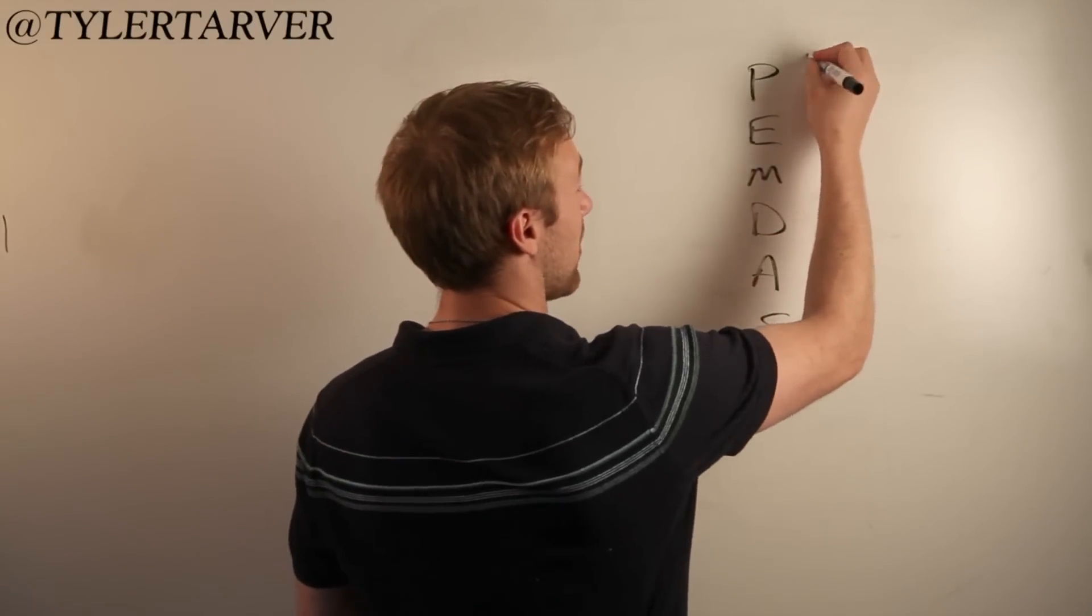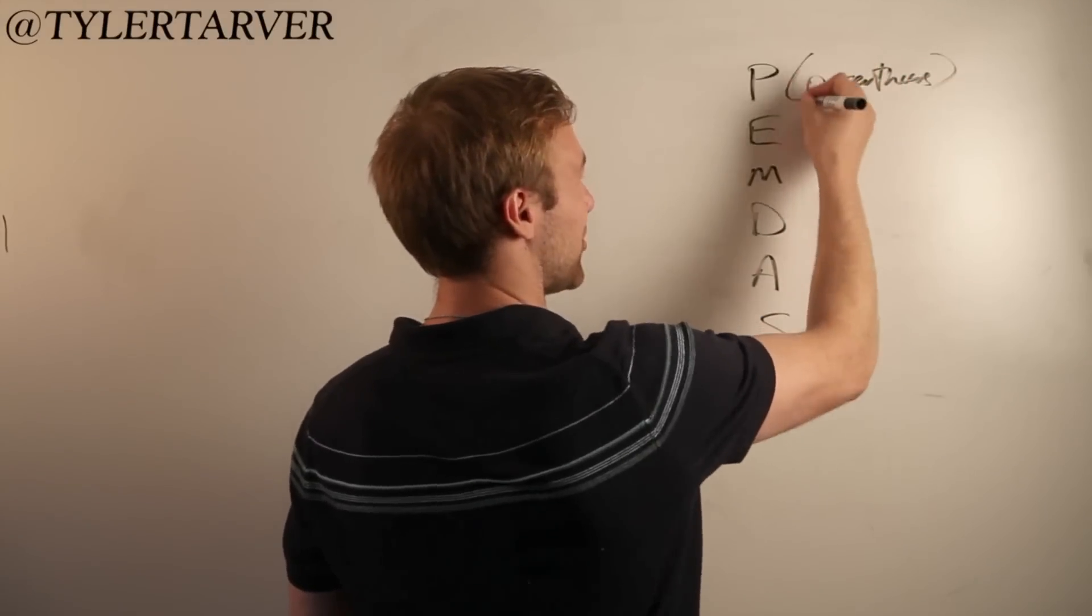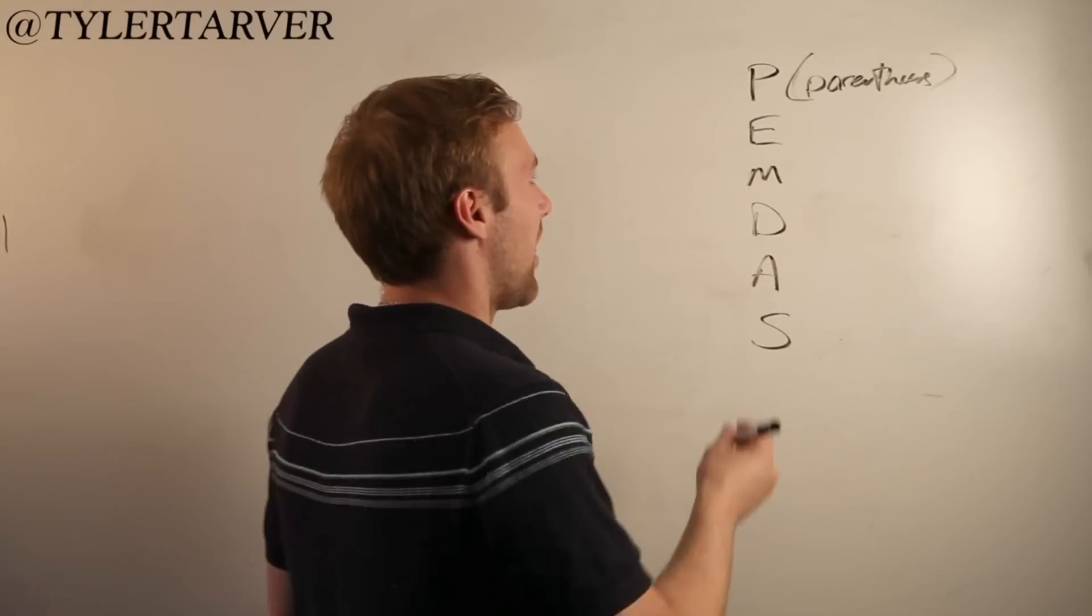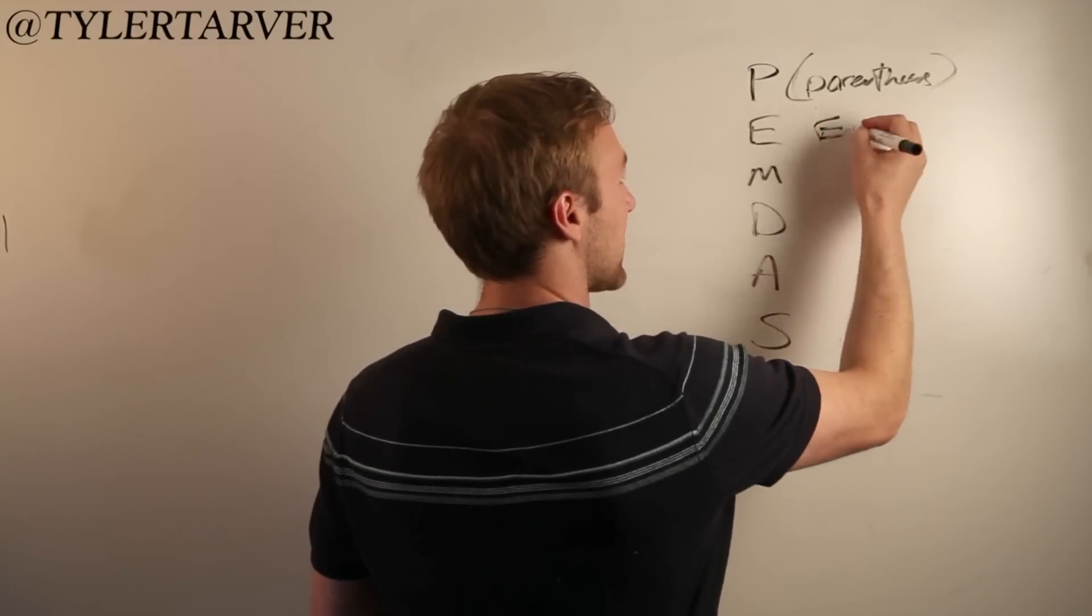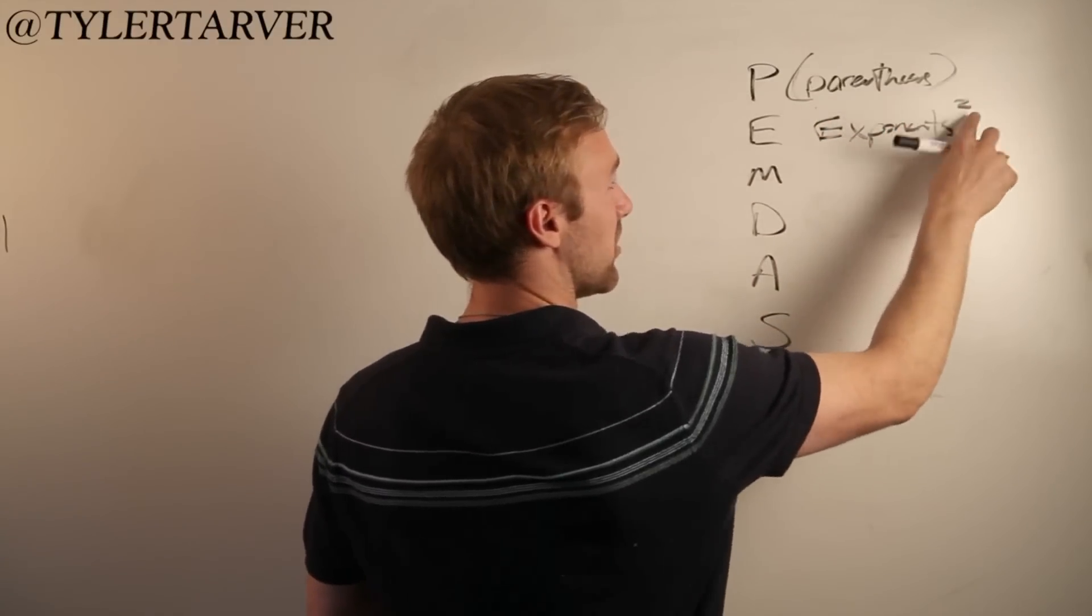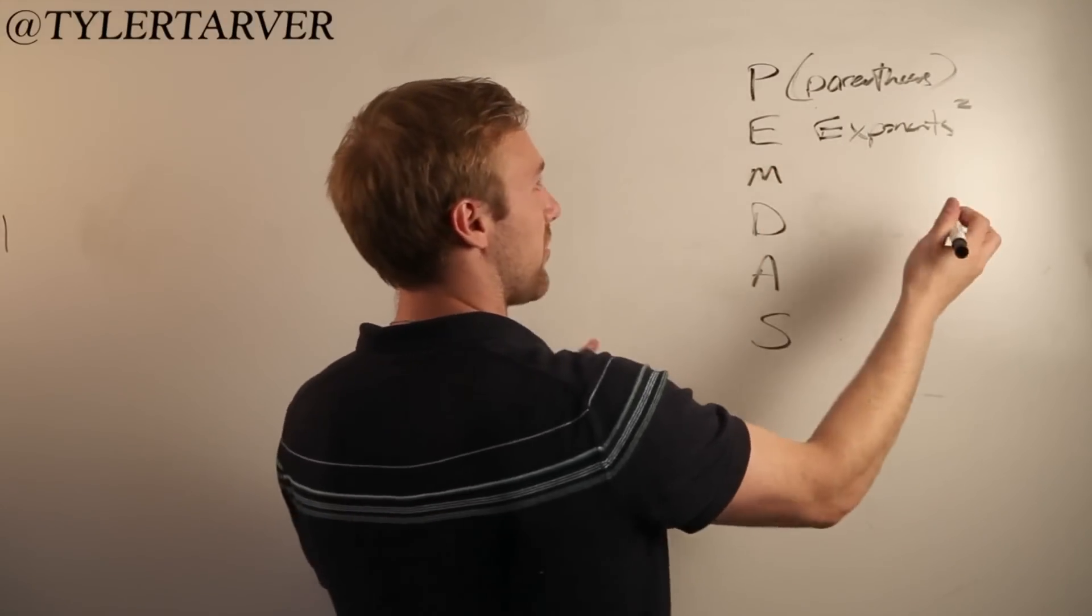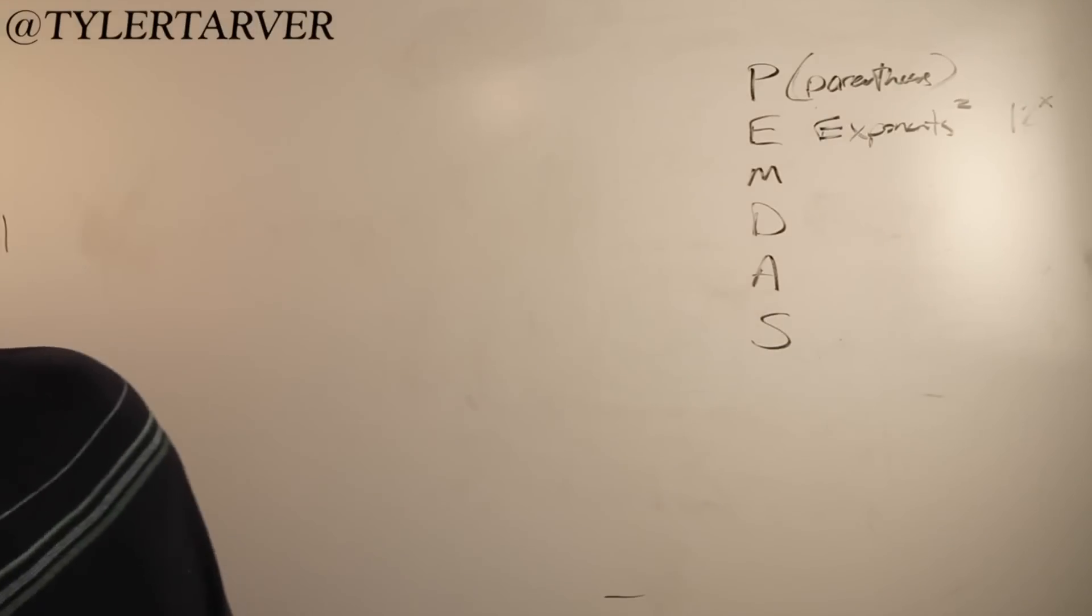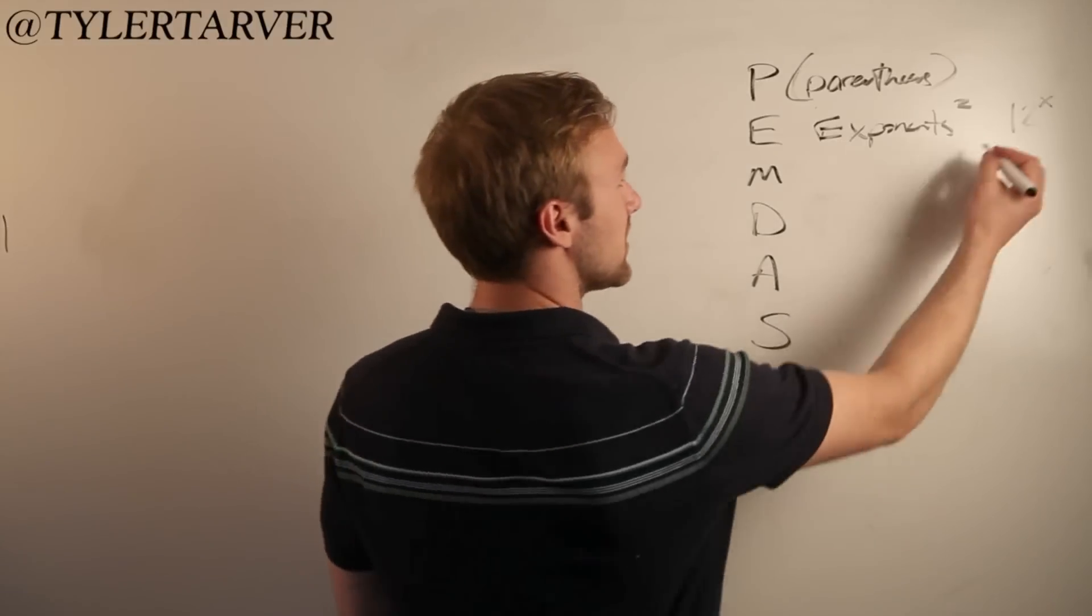The P stands for parentheses. I wrote it funny because I'm not sure how to spell it because I'm not a very smart person. And you're still watching, so thank you. That E is for exponents, which means like little things up there, little number up there where the degree sign would be. It's like when you have a regular number like 12 to the x power.